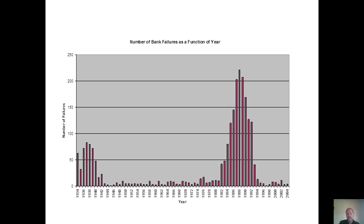The bank failures of the 1980s and early 1990s are again the savings and loan fiasco. One of the main results is that your bank today doesn't tend to keep loans on its books anymore. Instead, it will loan you money, securitize it, and sell it to somebody else. Since there were so many securitized loans, this solution to the S&L crisis tended to then lead to the later financial crash around 2007.